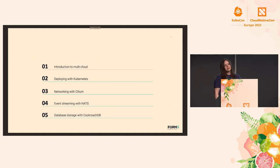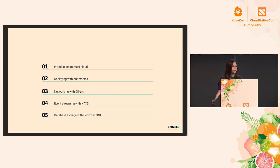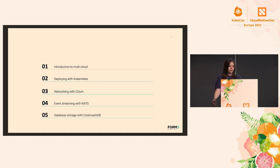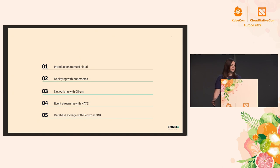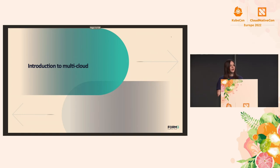This talk will consist of a quick introduction of why we decided to go multi-cloud and what it actually means. I'll set the background and show you our previous architecture. Then I will introduce each of the technologies that made the multi-cloud transition possible — in particular, Kubernetes, Cilium, NATS, and CockroachDB. These are amazing cloud-agnostic technologies that we'll be learning about today. Let's begin — we've got a lot of ground to cover.